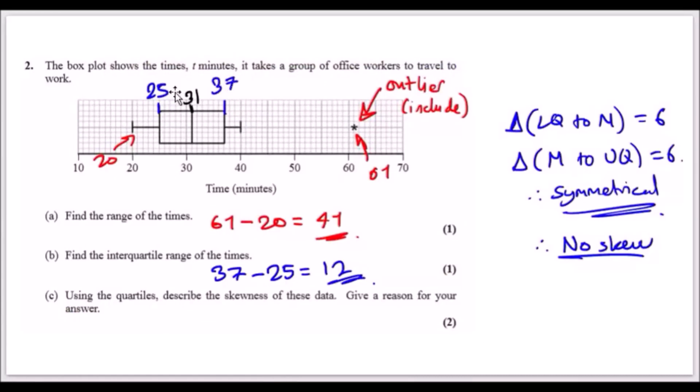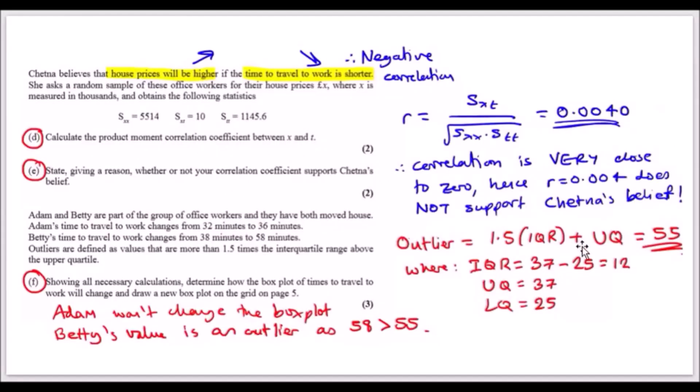We can calculate IQR from the previous problem: 37 take away 25 is 12. Plug in 12 here and plug in 37 because the upper quartile is 37, and you get 55. Looking at Betty's time, we can see that 58 minutes is above 55, so this means it's an outlier.